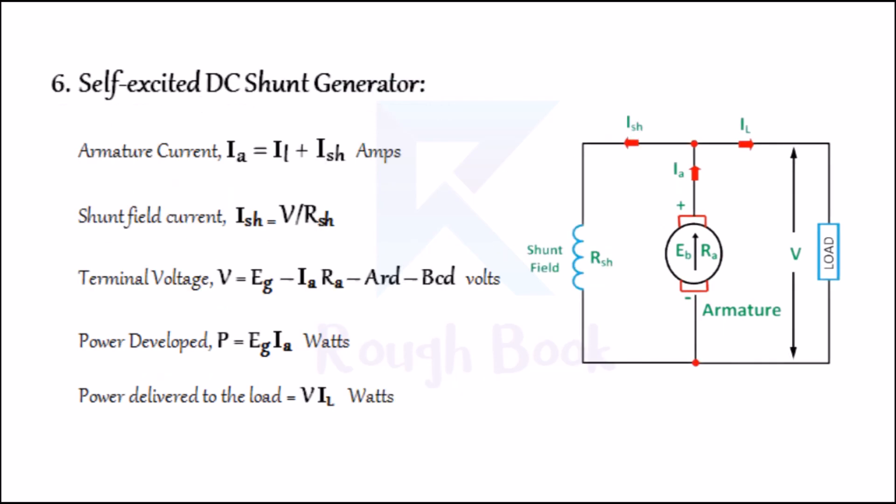Number six: Self-excited DC shunt generator. In this type of generator, the field windings are connected across or in parallel with the armature winding so that the full voltage of the generator is applied across them. Armature current IA = IL + ISH, where ISH is the shunt field current given by V / RSH, and RSH is the resistance of the field winding. Terminal voltage V = EG − armature resistance drop − armature reaction drop − brush contact resistance drop in volts. Power developed P = EG × IA in watts. Power given to the load = V × IL in watts.